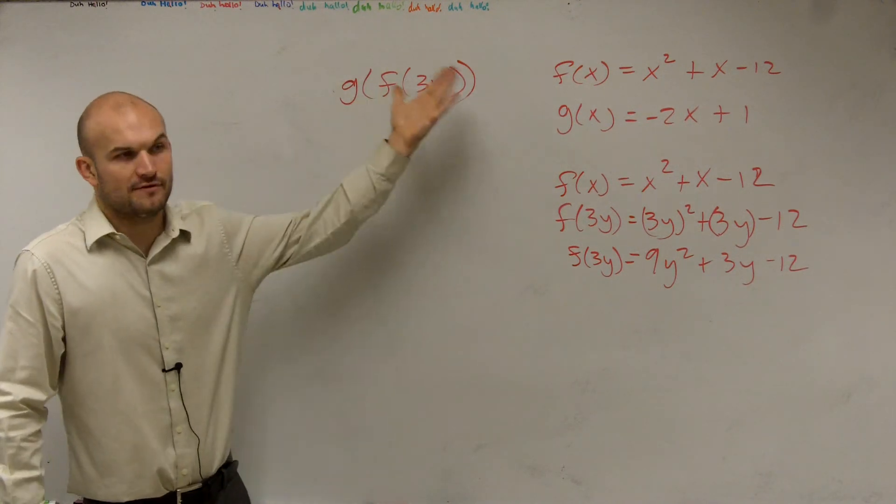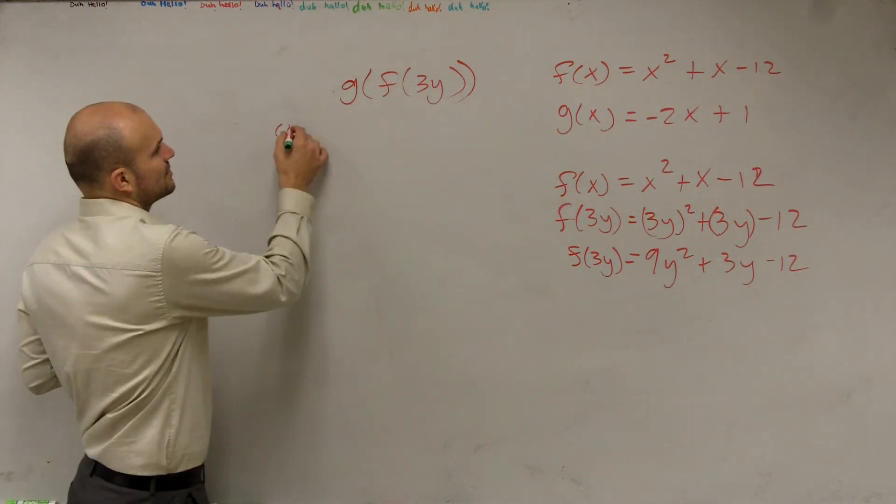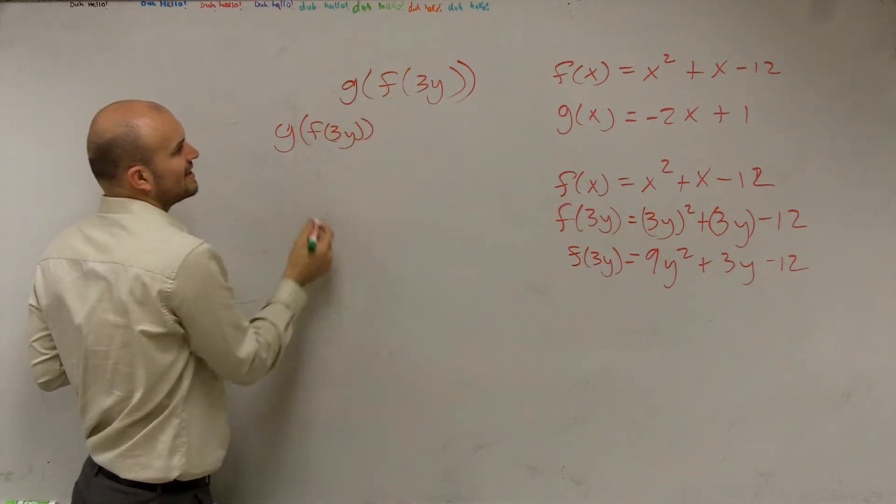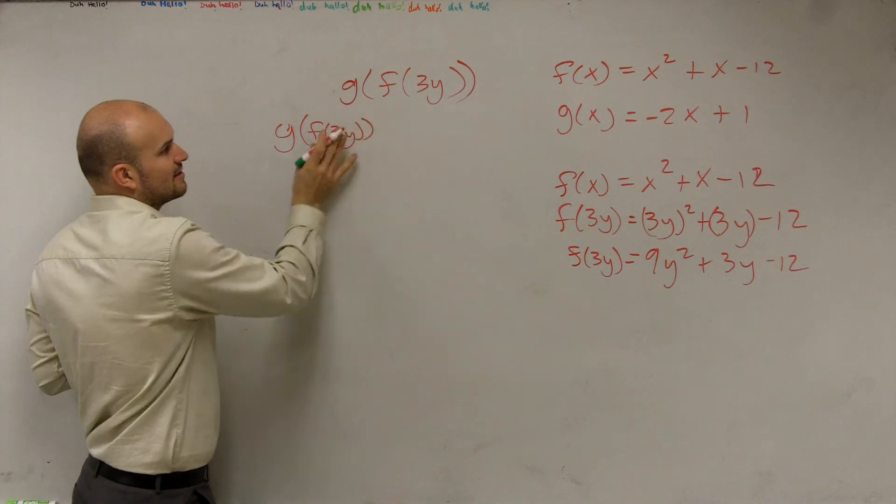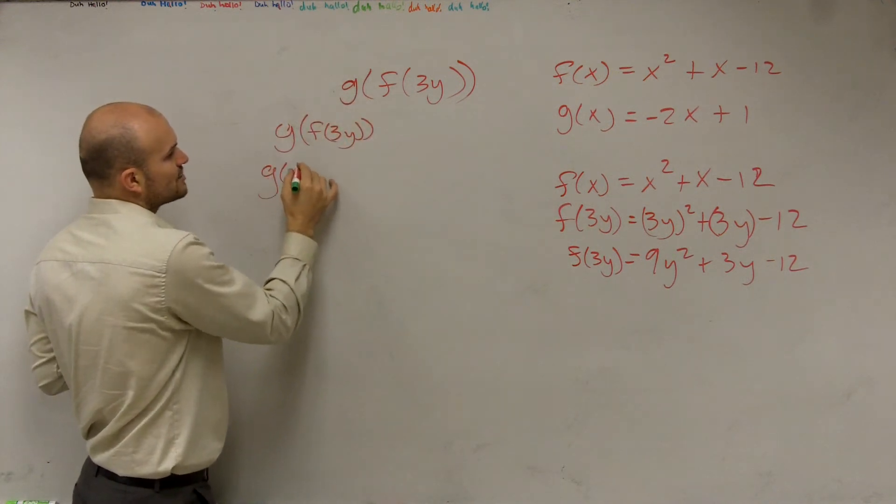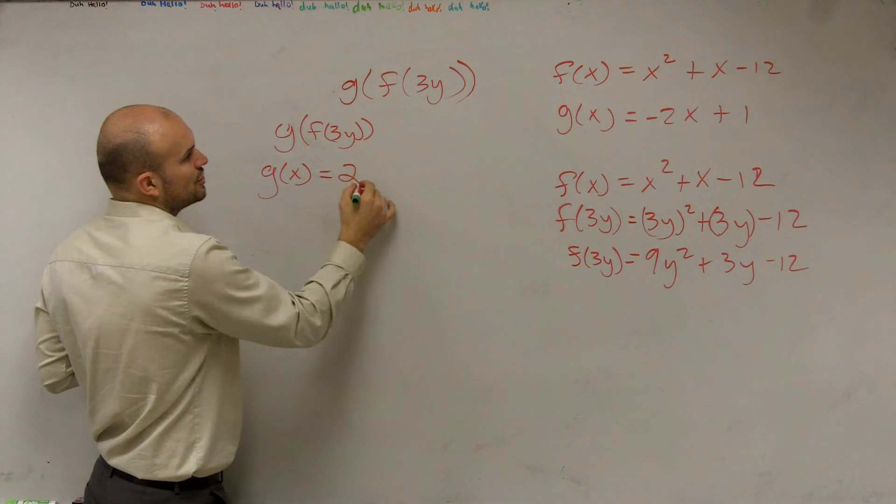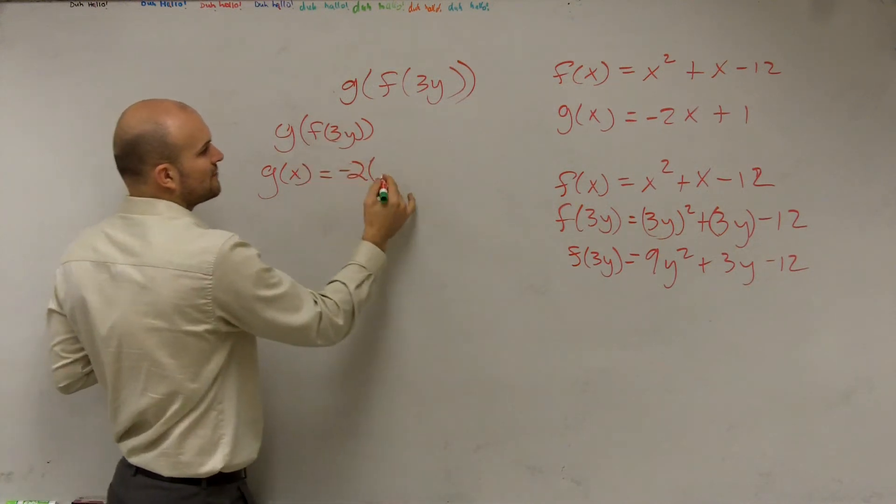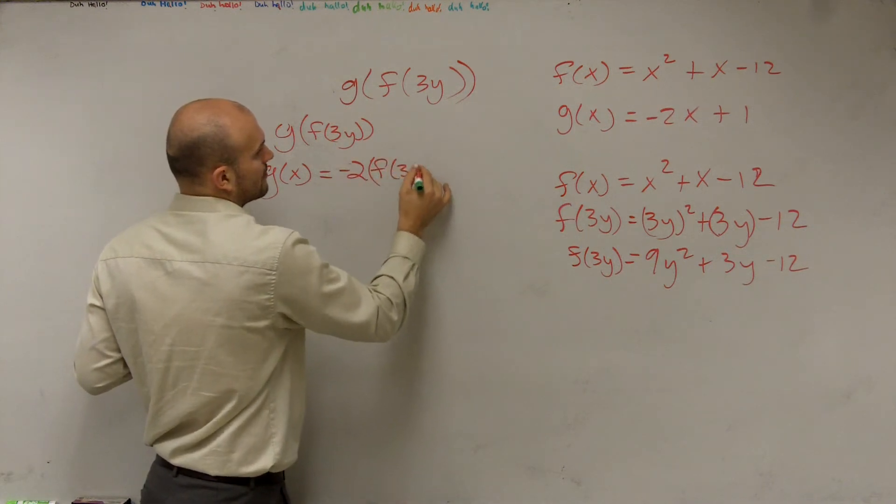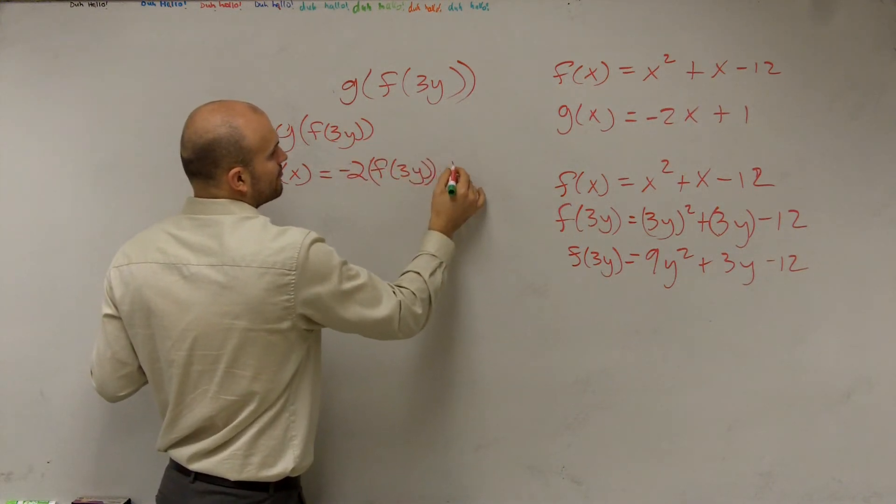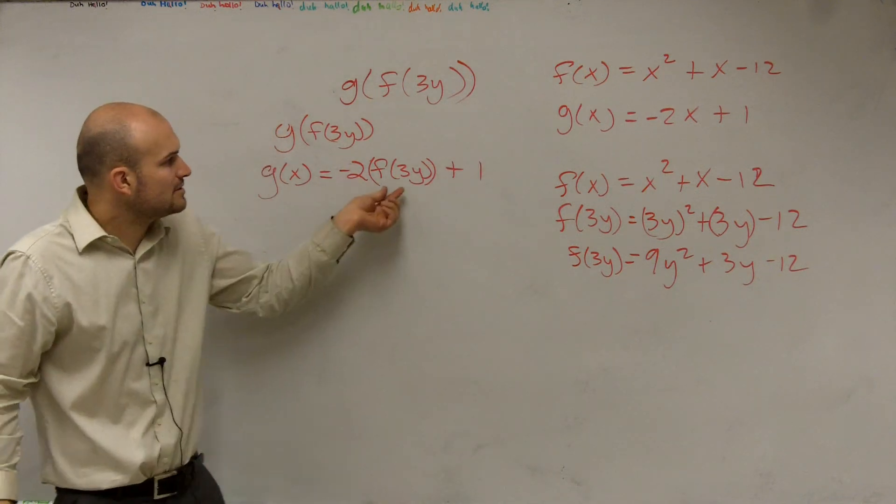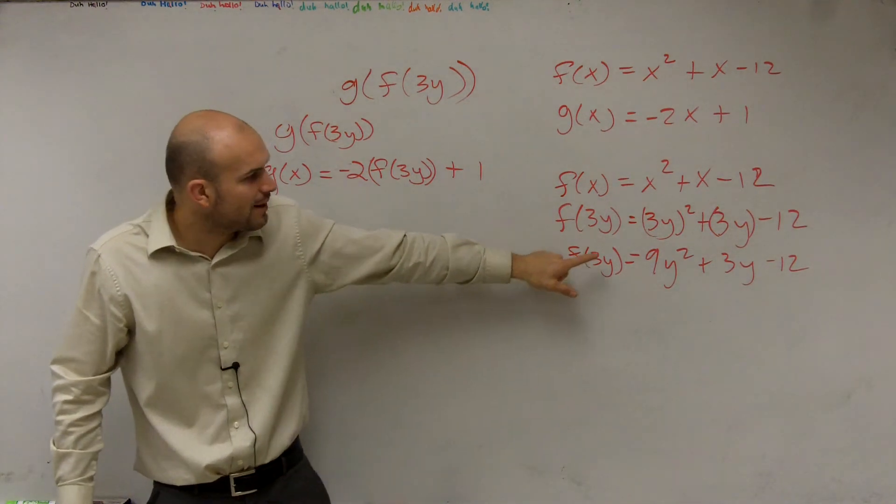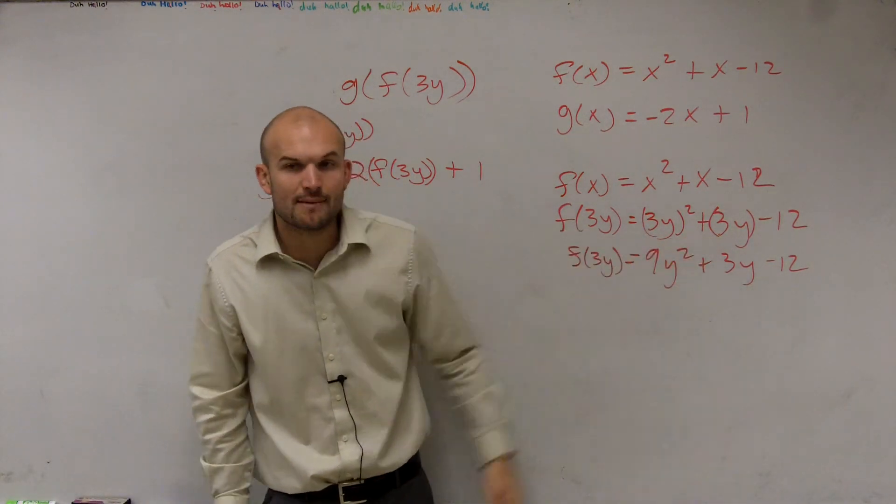Now, it's saying, what is g of f of 3y? So, what that represents, g of f of 3y, what you're simply doing is plugging this into your function of g of x. So, if I say, what is g of x, that means I'm going to say negative 2 times f of 3y, then plus 1. Well, ladies and gentlemen, do we know what f of 3y is? Yeah. We figured f of 3y right here. f of 3y is 9y squared plus 3y minus 12.